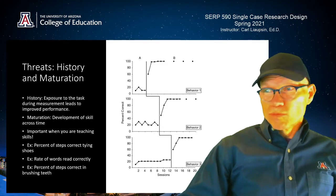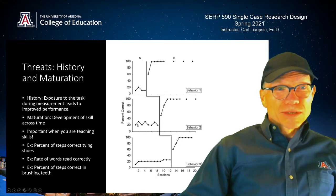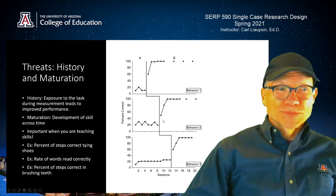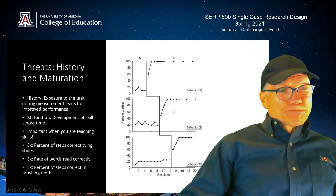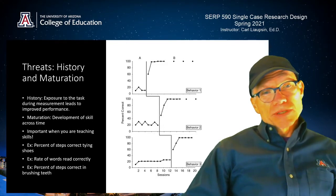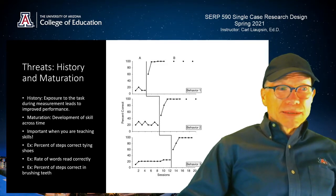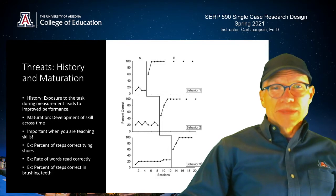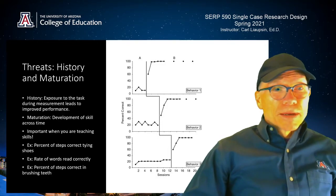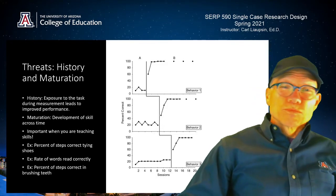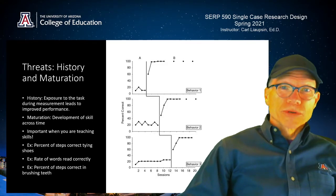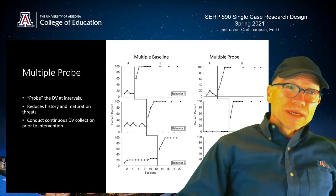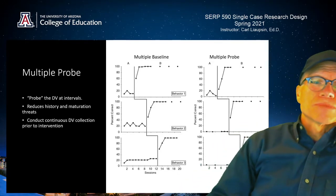Maybe they just get better enough that during baseline it already looks like they're improving. You don't want to implement yet, because it really destroys your demonstration of experimental control. Other examples: words read correctly — if you give a client repeated attempts at reading, maybe they just get better. Percent steps correct in brushing teeth — if a client has multiple opportunities at a skill, maybe they'll just start to get better. But if you want to demonstrate experimental control of your intervention, that's not going to work. So what can you do? One thing is to use a variation called a multiple probe design.